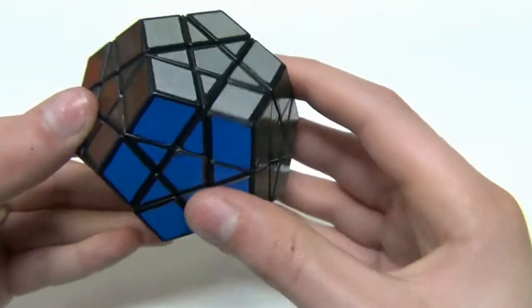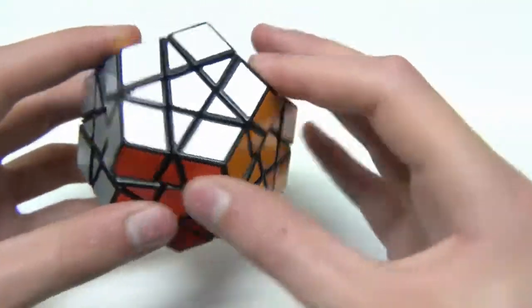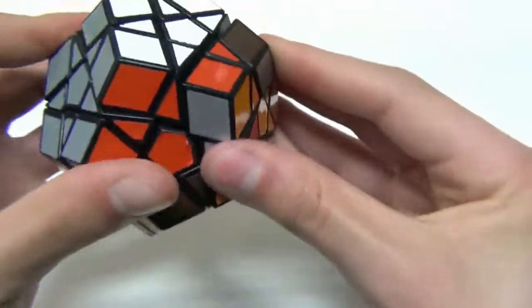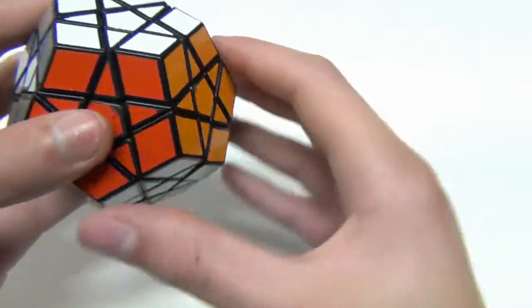It's just that the color scheme is a little bit different and a little bit awkward. But you know, you can still use the same algorithms for it and still solve it just like a normal Megaminx.